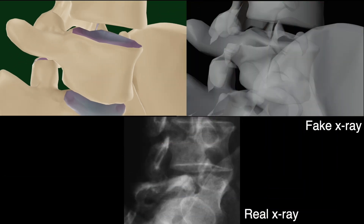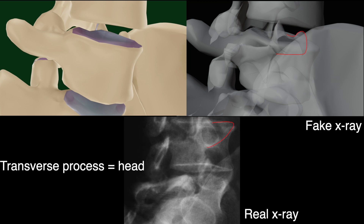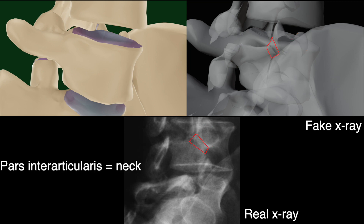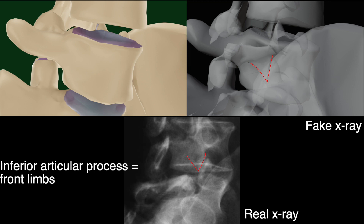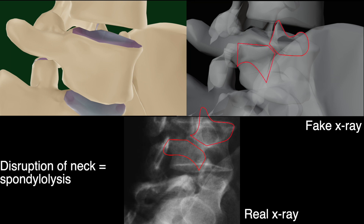Here we can identify the structures of the well-known Scotty the dog sign, where the superior articular process forms the ears of the dog, the transverse process forms the head of the dog with the pedicle forming the eye, and the pars interarticularis forming the neck. The inferior articular process forms the front limbs, and the lamina forms the trunk of the dog. In this view, a disruption of the neck of the dog corresponds with a pars interarticularis defect, indicating spondylolysis.